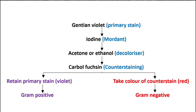For the procedure, we will use four things: primary stain, mordant, decolorizer, and then the counterstain. The primary stain used is gentian violet — all bacilli are stained with the same color. Then we add iodine as a mordant, which makes a complex of the primary stain with peptidoglycan. Next we add the decolorizer, which causes some bacilli to get decolorized. Then we add the counterstain, which is carbolfuchsin.